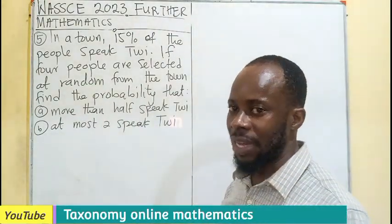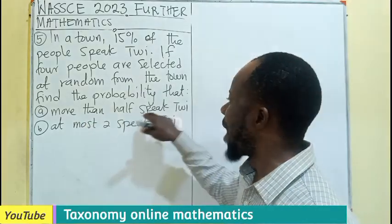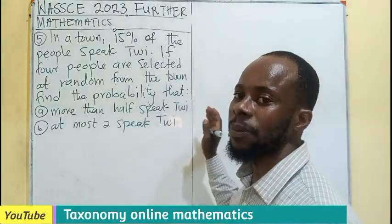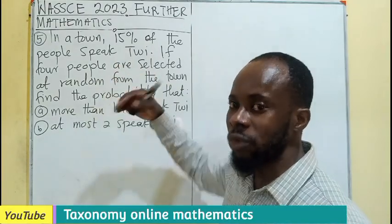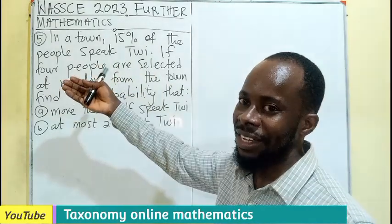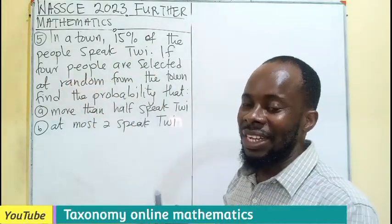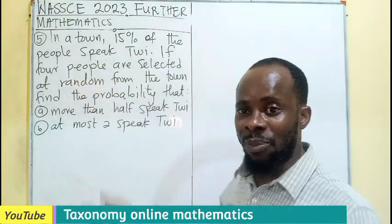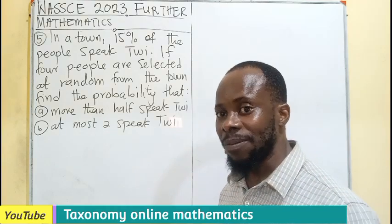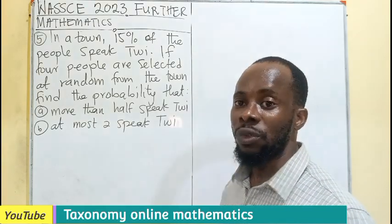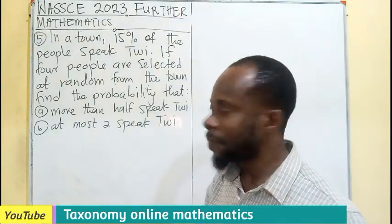So this is a probability question. But we are saying more than half speak three. What we are given involves those who speak three, so direct probability may not work. We are going to use what we call binomial probability.